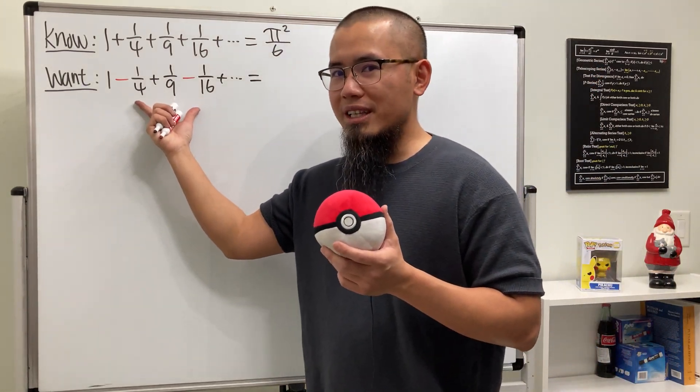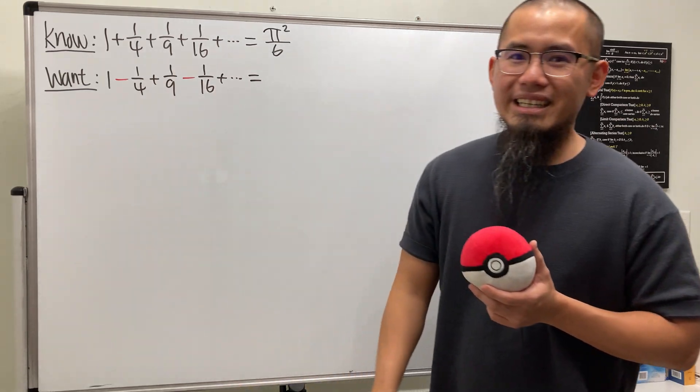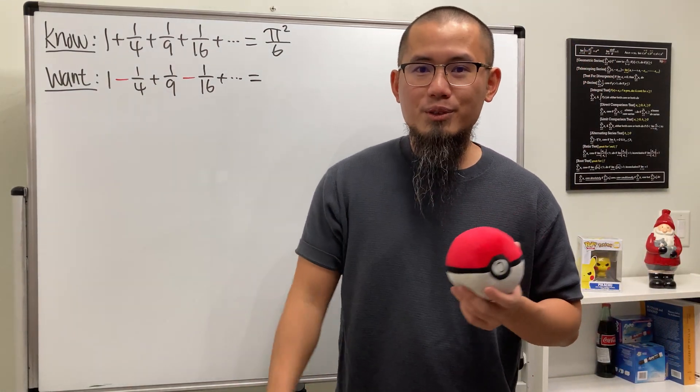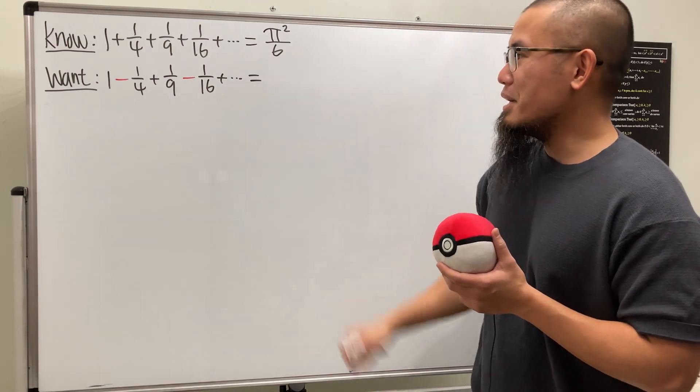And we are going to find out the alternating version of that. Sometimes it's not easy to find out the alternating sum of a convergent series. But for this one, it's really cool. So check this out.